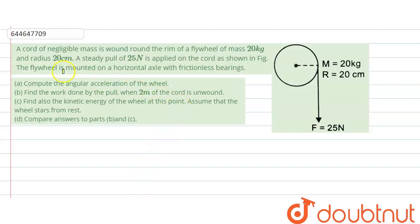In this question, a chord of negligible mass is wound around the rim of a flywheel of mass 20 kg and radius 20 centimeters. A steady pull of 25 newtons is applied on the chord as shown in the figure. The flywheel is mounted on a horizontal axle with frictionless bearings.